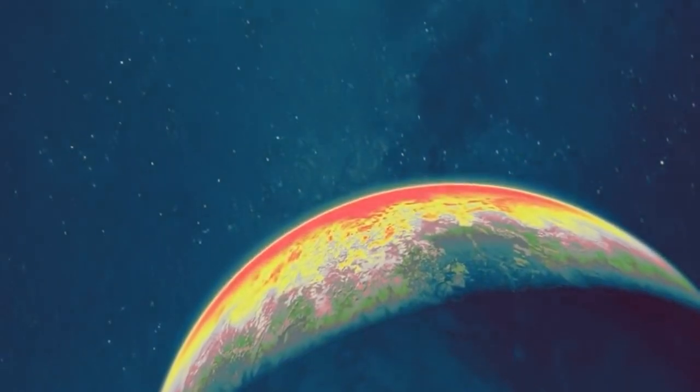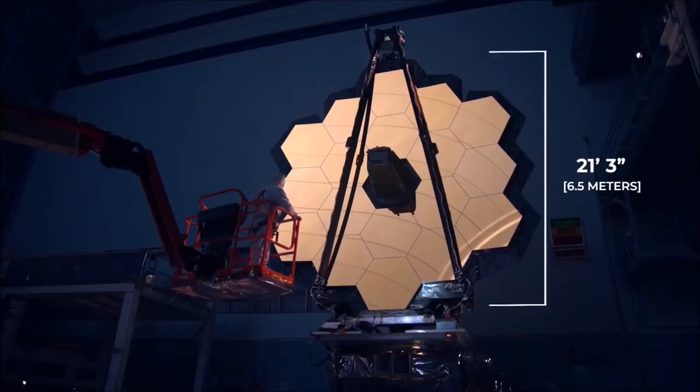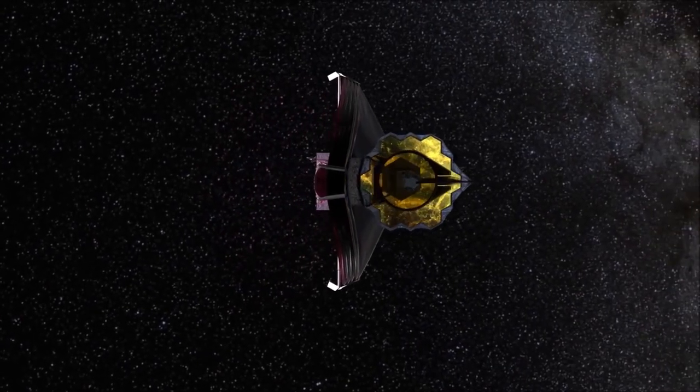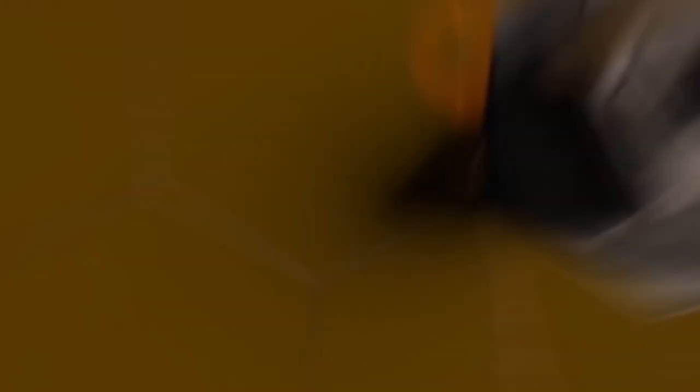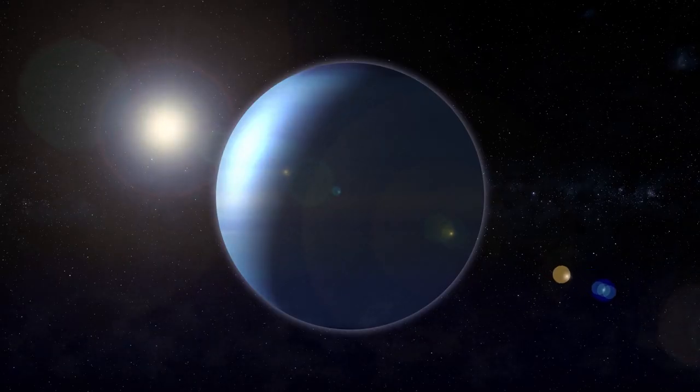Although it isn't the first detection of water molecules in another world, the Webb Telescope that's built with a 21-foot mirror more than two and a half times larger than Hubble's allows incredible views into those distant planets like WASP-96b.